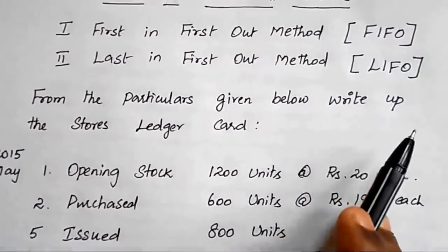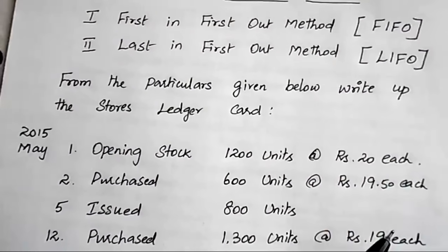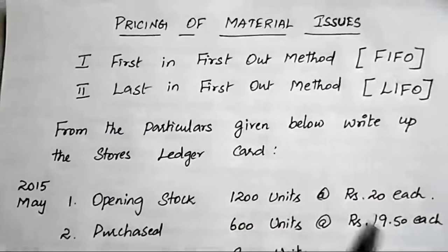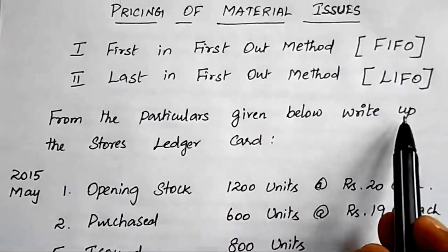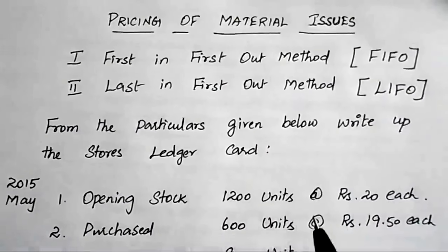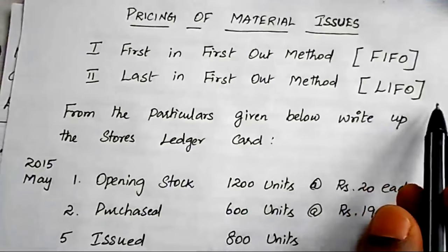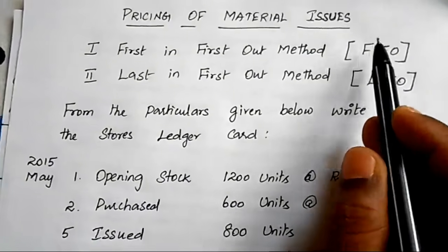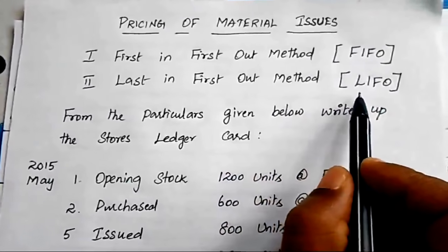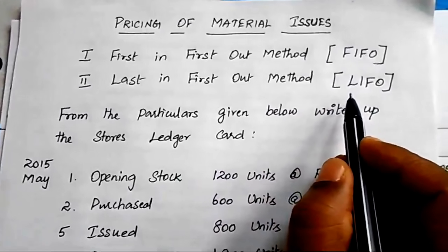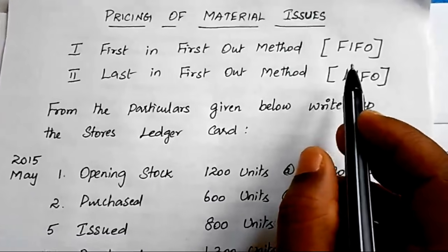Now I am going to explain the LIFO method. LIFO means Last In, First Out. According to the LIFO method, the price of material last purchased and kept in stores is charged for the issue first, and then the preceding lots are issued. This is the key difference from FIFO: under FIFO we issue the earliest lot first, but under LIFO we issue from the last purchase.